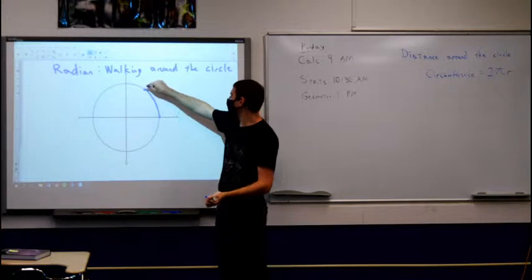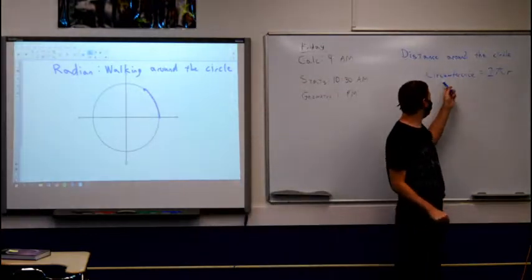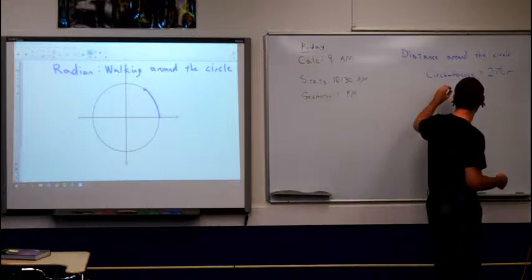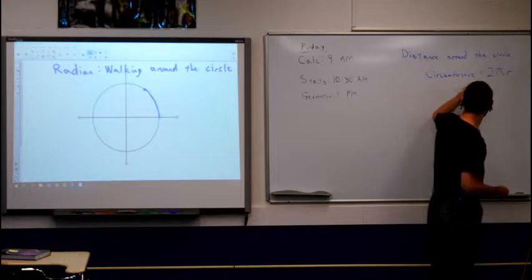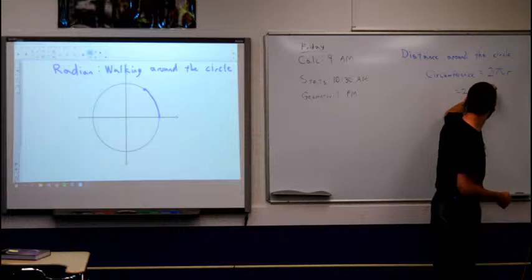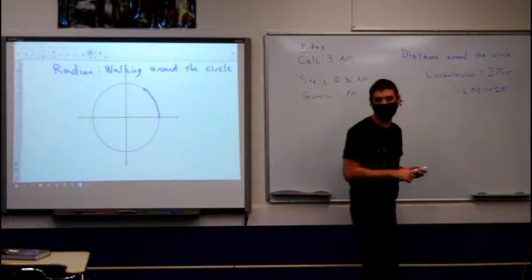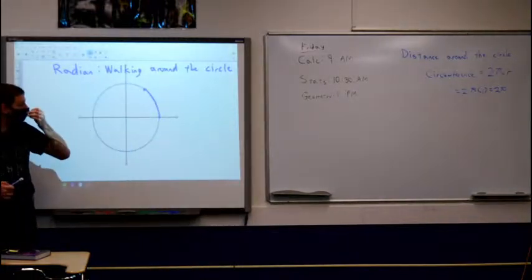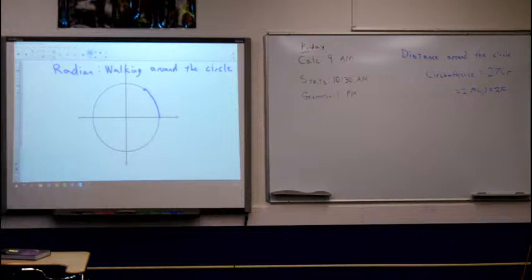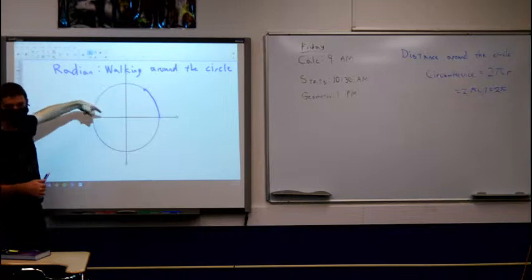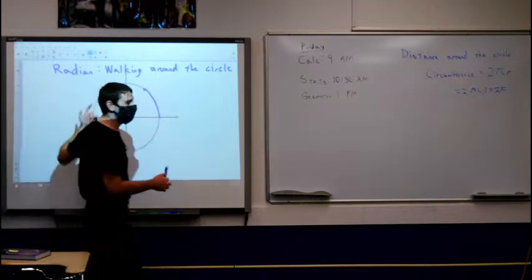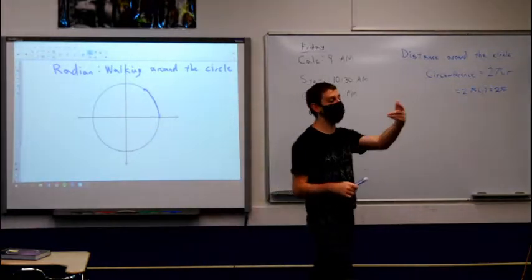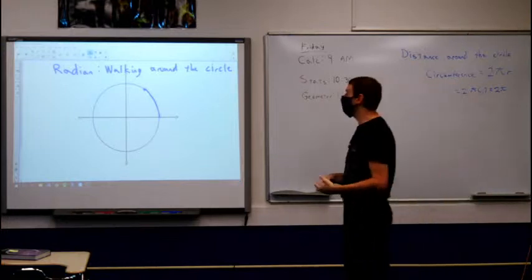To recap: we're looking at our distance walking around the circle, and to measure that we can use circumference. The distance all the way around the circle would be 2πr. So if we're on a unit circle, 2π times our radius of 1 would just be 2π. That means all the way around the circle is 2π, which is why every cycle around the circle is 2π radians — because it's based off of circumference and the circumference formula.